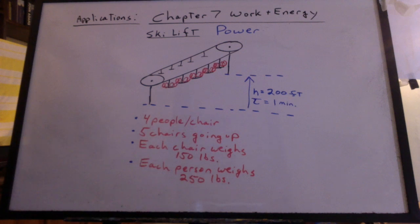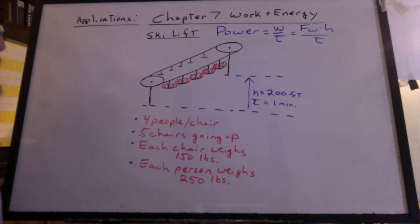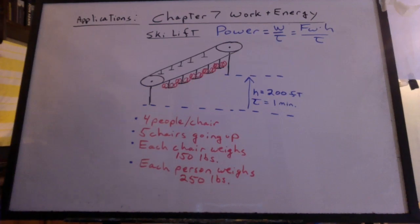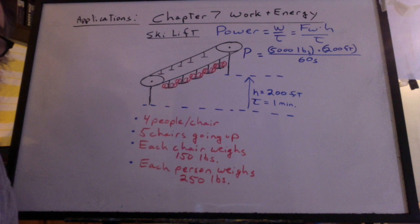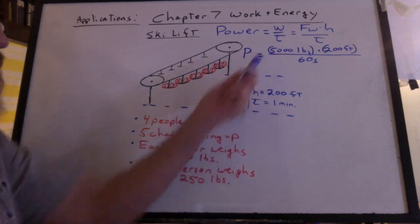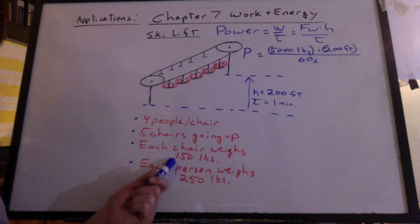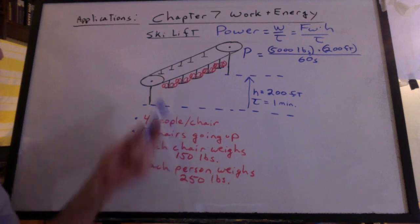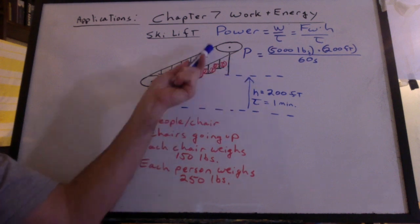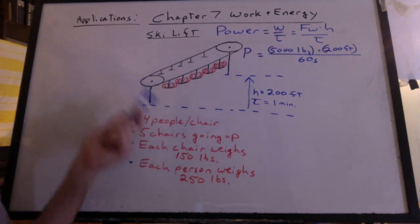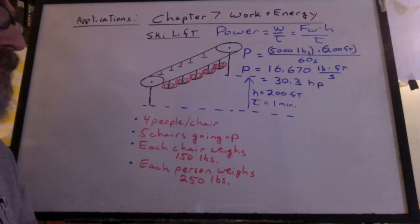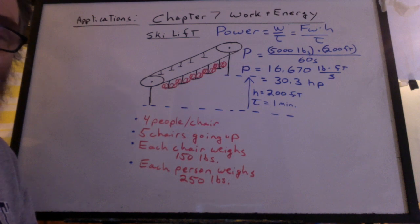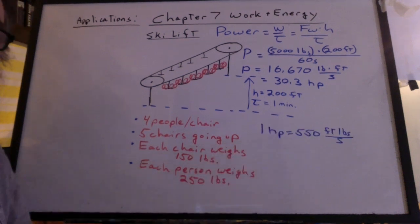The chairs are going to bring everybody up 200 feet in one minute. How do we do the power? It's work over time. We need the total weight times the height, and it's just like running up the stairs. I get 5,000 pounds times 200 feet divided by 60 seconds. 5,000 pounds doesn't include the weight of the chair, and it shouldn't, because the chairs don't get off at the top. The chairs come back down on the other side, so it cancels out. We get 16,670 pound-feet per second, or about 30.3 horsepower. One horsepower is 550 foot-pounds per second.